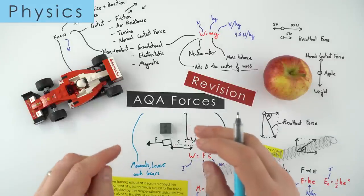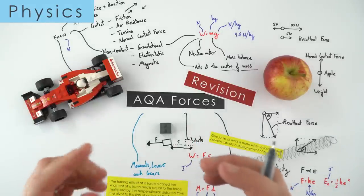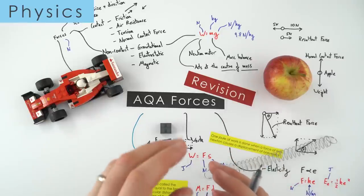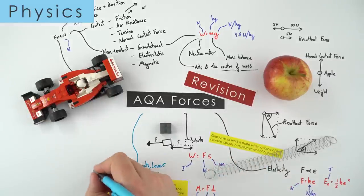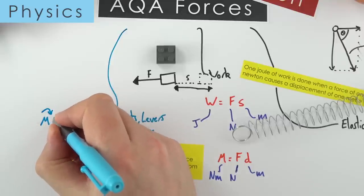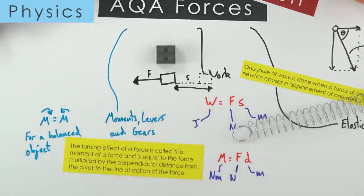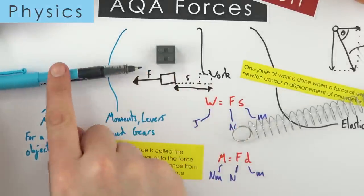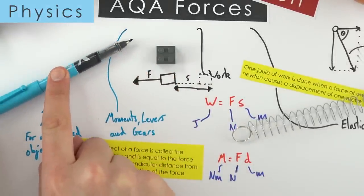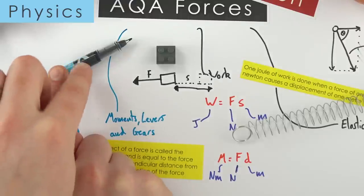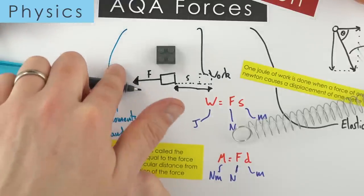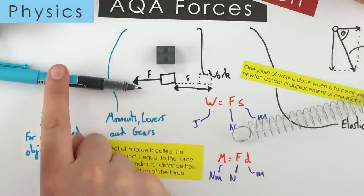If an object isn't rotating and is balanced, the clockwise moments are equal to the anti-clockwise moments. In the simplest example — a seesaw — if you know a certain force at a distance going anti-clockwise and you know the size of a force you can apply, you can work out the distance needed to apply that force to keep it in equilibrium.